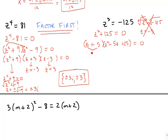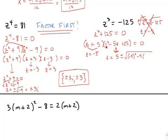The first factor (z + 5) is linear, so setting it to zero gives z = −5 — the same answer we'd get from taking a cube root. The second factor z² − 5z + 25 is quadratic and never factors further when you have a sum or difference of two cubes. So we use the quadratic formula with a = 1, b = −5, c = 25: x = (5 ± √(25 − 100)) / 2.